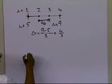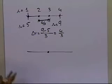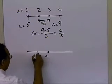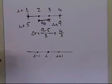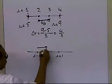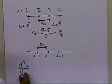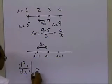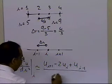So if I was at an arbitrary node i, and I had to break this interval into n segments, to the left of node i is node i minus 1, and to the right is node i plus 1. I can approximate the second derivative of u with respect to r at node i as: u sub i plus 1, minus 2 u sub i, plus u sub i minus 1, divided by delta r squared.